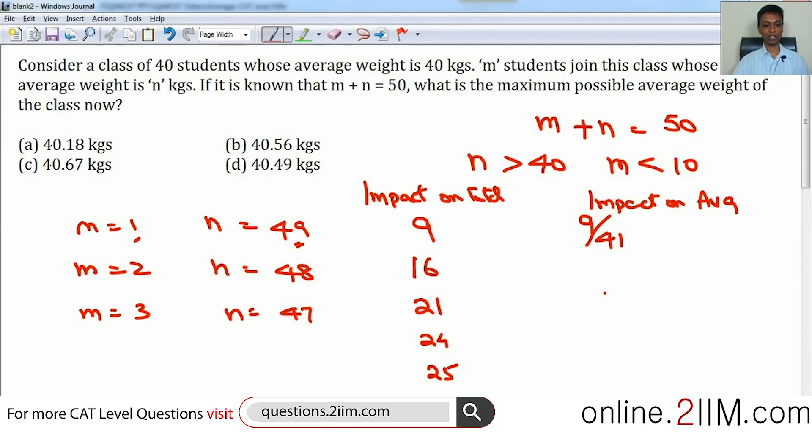In the next case, 16 is the impact on total. There are two students coming in. The impact will be 16 by 42. Impact on total will be 21, three students. Impact on average will be 21 by 43, and so on.